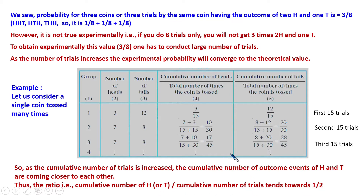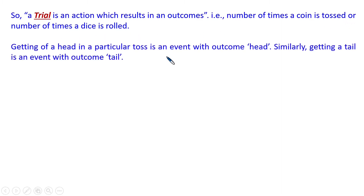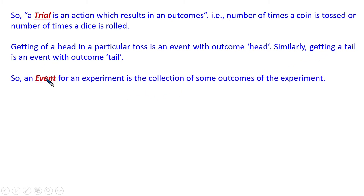What is a trial? A trial is an action which results in an outcome — that is, the number of times a coin is tossed or the number of times a die is rolled. Getting a head in a particular toss is an event with outcome head. Similarly, getting a tail is an event with outcome tail. An event for an experiment is a collection of some outcomes of the experiment. These are the definitions of the terms you will be reading: trial, events, outcomes.